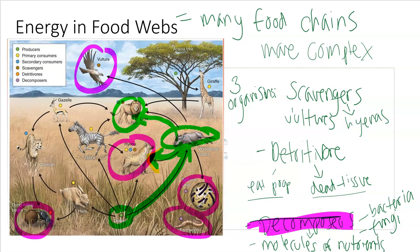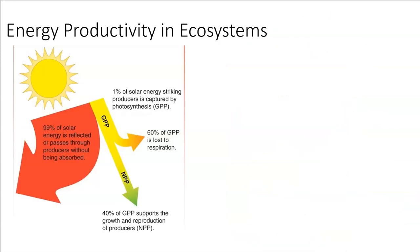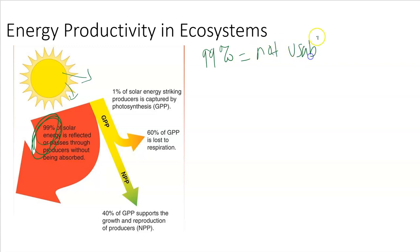Ecosystems can be really productive or not that productive, and we like to understand the amounts of energy being used up in them. Scientists have created a system of measurement. The sun gives off lots and lots of energy to the Earth, but about 99% of the energy given off by the sun is reflected and bounced back into the atmosphere without being absorbed. So 99% of our energy is not usable. But there is 1% of that energy that finds its way into producers — 1% of energy from the sun is captured by producers.